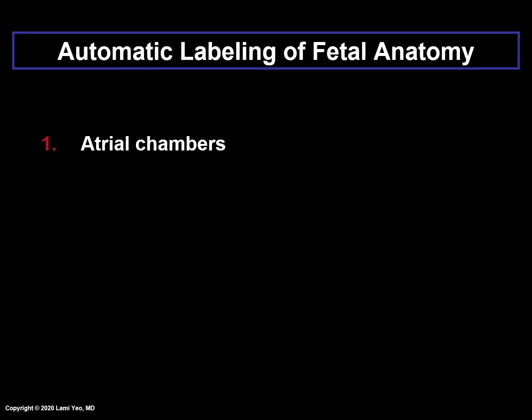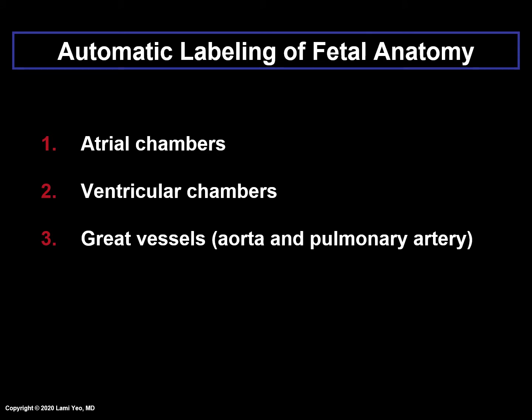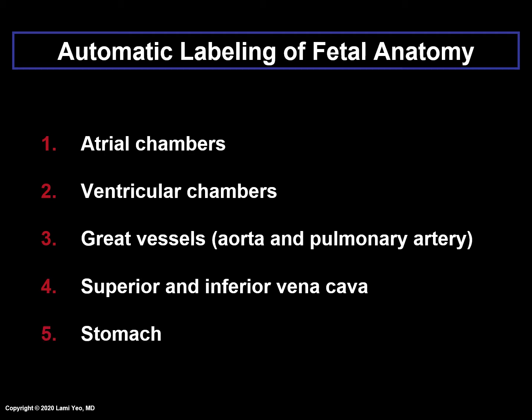The fetal anatomy which is labeled automatically includes the atrial chambers, ventricular chambers, great vessels — the aorta and pulmonary artery — superior and inferior vena cava, and the stomach.